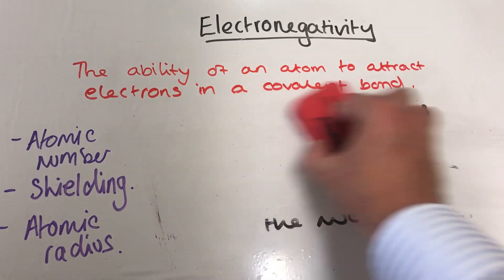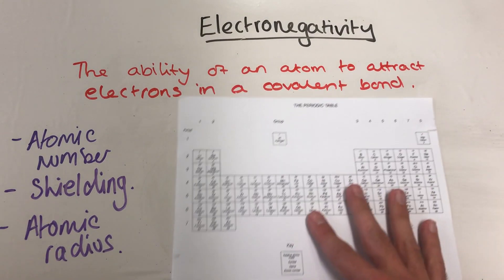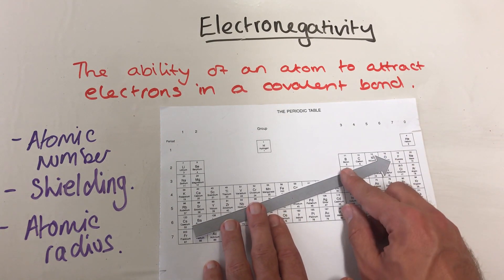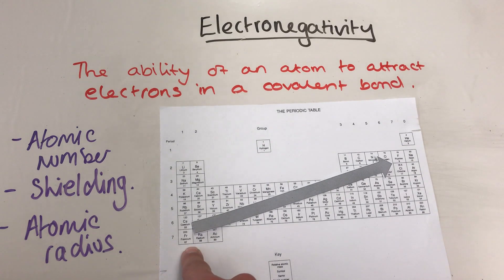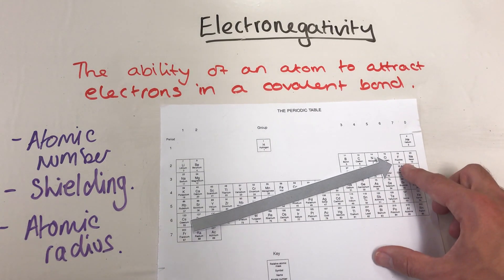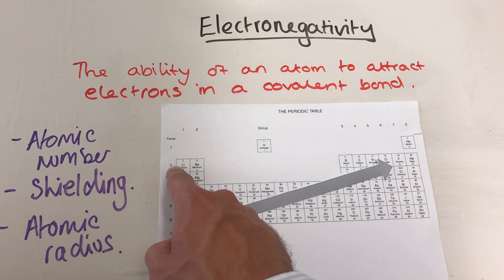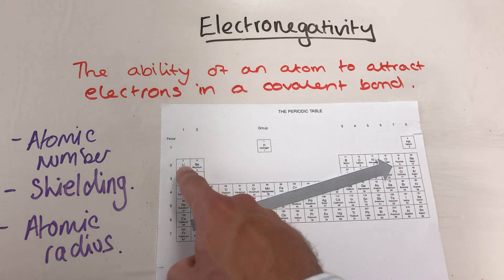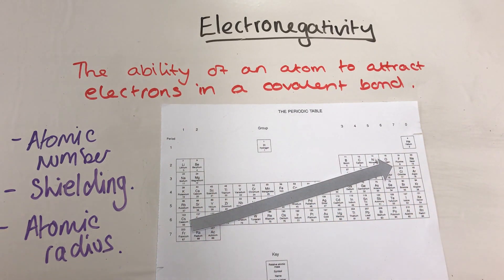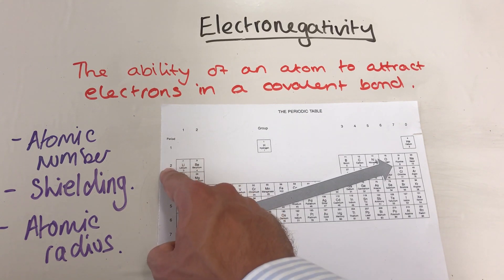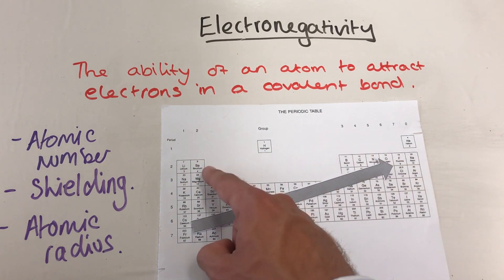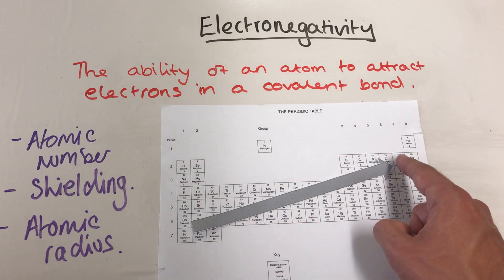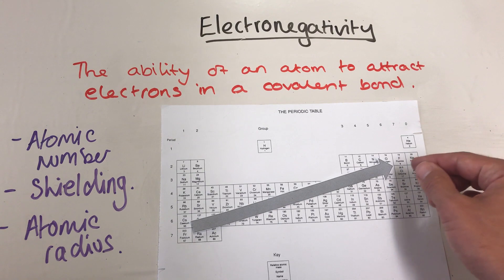Just to recap — looking back at our periodic table — electronegativity tends to increase going across a period and also increase going up the group, so francium has the lowest electronegativity and fluorine has the highest. Going across a period: the atomic number increases, so the nuclear charge at the centre pulling electrons in increases. In the same period there is no extra shielding — the same number of shells — so no extra shielding of the nuclear charge. That results in the atomic radius decreasing as you move across the period, and therefore the bonding electrons are more attracted, being closer to the nucleus.